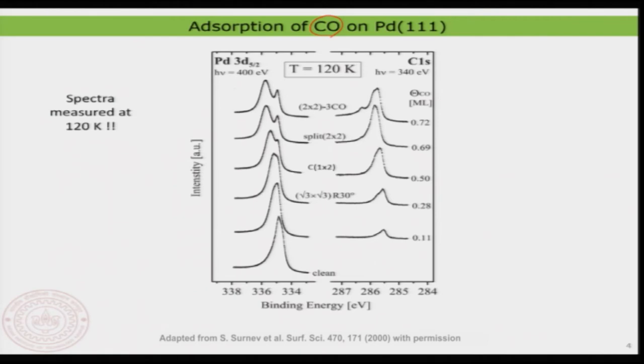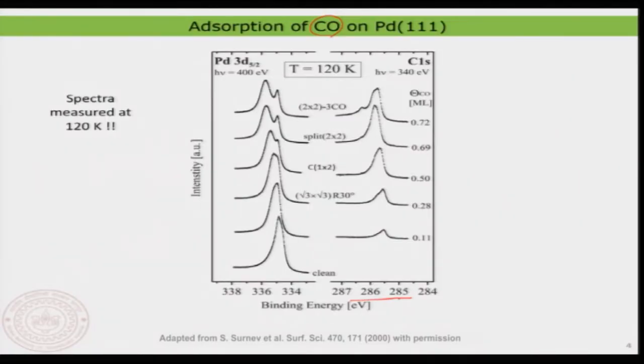What you are seeing here is a set of XPS data. We are not looking at the survey scan; we are looking specifically into the carbon 1S region and the palladium 3D level. These are the three resonances we are looking at. For the palladium 3D, the 5/2 state represents the 5/2 spin-orbit state. The 3/2 state is not examined here because the information from both is similar. But I have other examples later where you will see how they look.